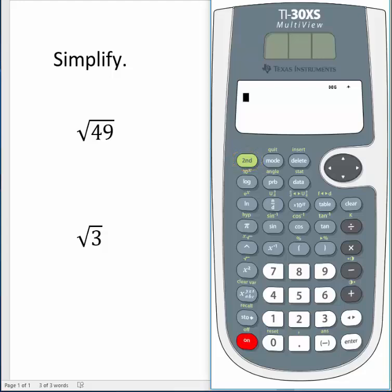Let's find the square root of 49 using our calculator. First select the second function. Notice that the word second is written in the window in very tiny print.